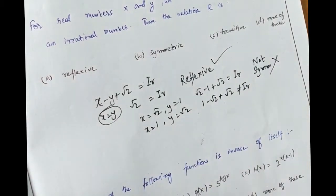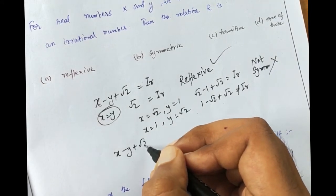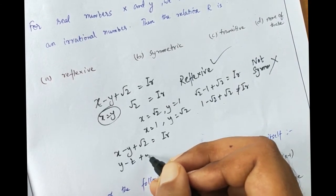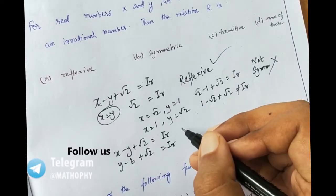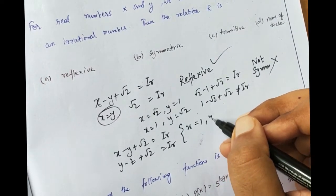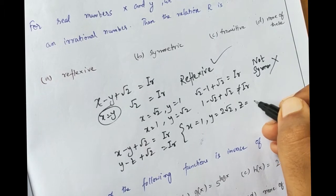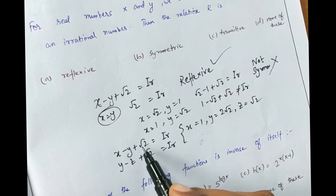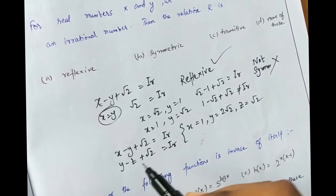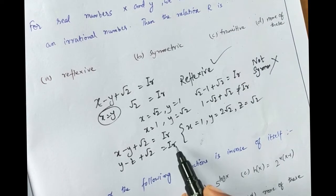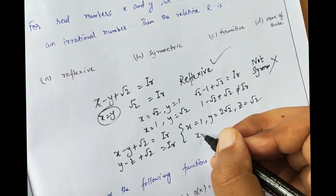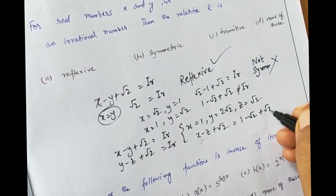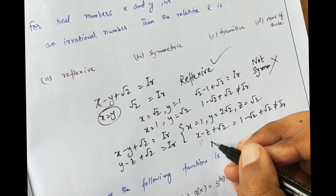Next, whether it is transitive or not. We consider x minus y plus root 2 is irrational, and y minus z plus root 2 is another irrational number. Taking x equal to 1, y equal to 2 root 2, and z equal to root 2: 1 minus 2 root 2 plus root 2 is irrational, and 2 root 2 minus root 2 plus root 2 is also irrational. But x minus z plus root 2 equals 1 minus root 2 plus root 2, which is not irrational. Therefore, this relation is not transitive.